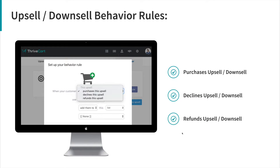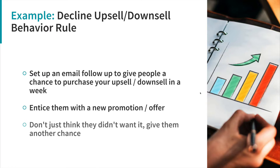Another behavioral rule that's really cool covers upsells and downsells. It's a similar setup but lives in the section where you build your upsells and downsells. You can trigger some kind of automated action if someone purchases one of those upsells or downsells, if they decline an upsell or downsell, or if someone refunds that upsell or downsell. Purchasing is simple — you can send a congratulations or instructions on what to do next with that product.